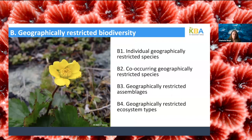Sites triggering criterion B are important for geographically restricted biodiversity. These sites hold a significant proportion of the global population of an individually geographically restricted species under B1, co-occurring restricted range species under B2, geographically restricted species assemblages under B3, or geographically restricted ecosystem types under B4. By definition, there are relatively few sites where geographically restricted biodiversity exists, so there are few spatial options for safeguarding that biodiversity.